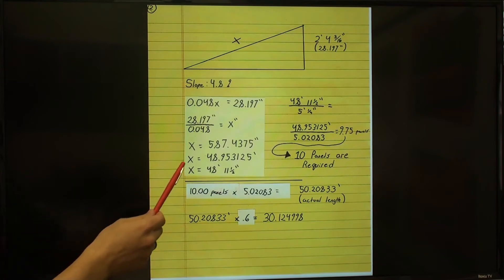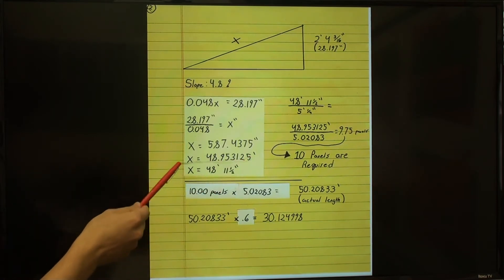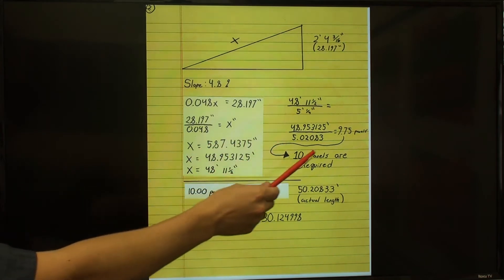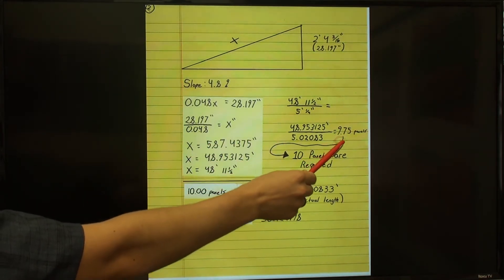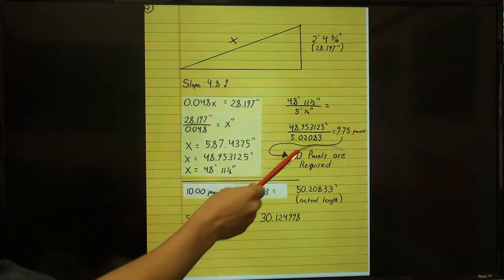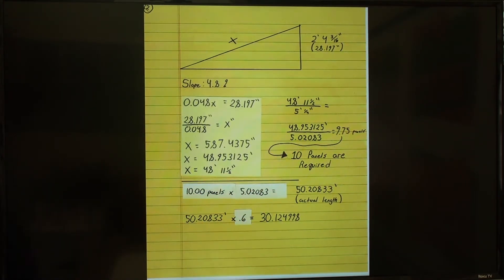That, divided by the 5 foot 1.25 inch panel size, tells us that the number of panels we use can be no less than 9.75 panels. We are going to round that up to 10, because only full size panels are being used here, and the sidewalk must align properly.